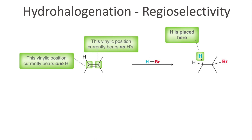An easy way to remember this is that hydrogens will be added to the side with more hydrogens — the idea of the rich getting richer. If a position already has a hydrogen, it will be enriched with more hydrogens. This rule is known as Markovnikov's rule — the reaction is regioselective for the Markovnikov product, named after the scientist who studied this reaction in the mid-1800s. The Markovnikov addition is when the halogen is installed at the more substituted carbon, and the hydrogen is placed at the vinylic carbon with more hydrogens.